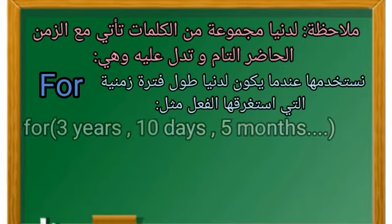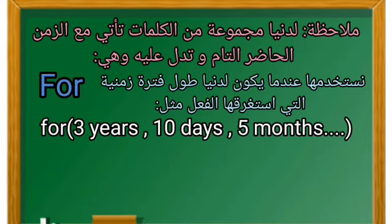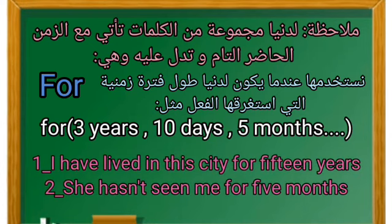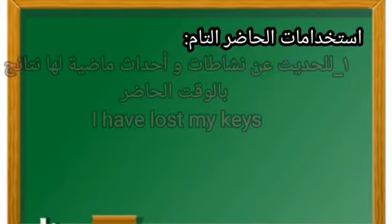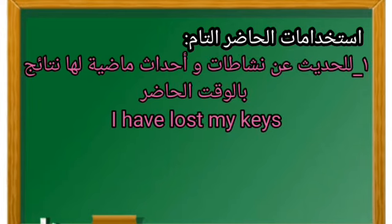For: نستخدمها عندما يكون لدينا طول الفترة الزمنية التي استغرقها الفعل، مثل: for three years، for ten days، for five months. مثال: I have lived in this city for fifteen years. She hasn't seen me for five months. الفرق بين for وsince: مع since نحدد بداية الفترة الزمنية، أما مع for فنتحدث عن طول الفترة الزمنية التي استغرقها الفعل.